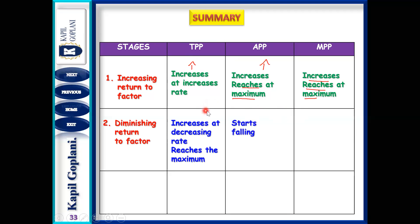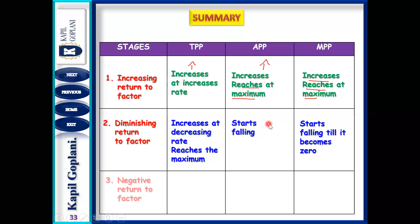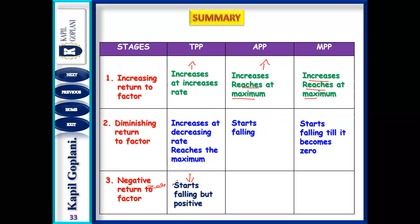In the diminishing return to a factor stage, TP increases but at a decreasing rate, and then reaches its maximum point. AP starts falling, and MP also starts falling and becomes zero. In the negative return stage, TP starts falling, but it will never turn out to be negative, and it will never be equal to zero.